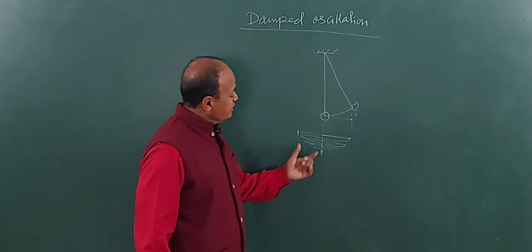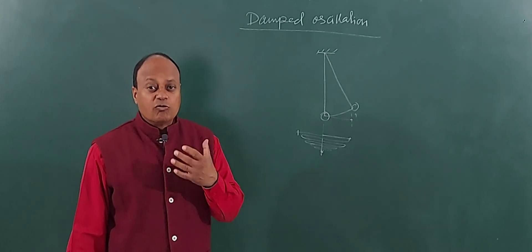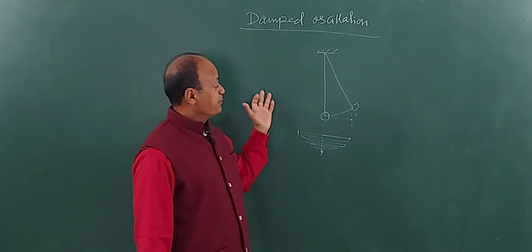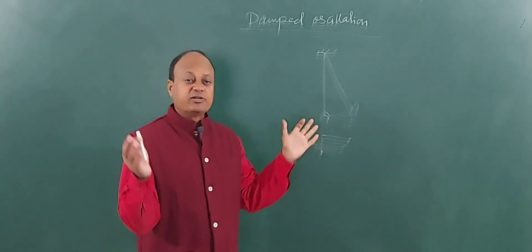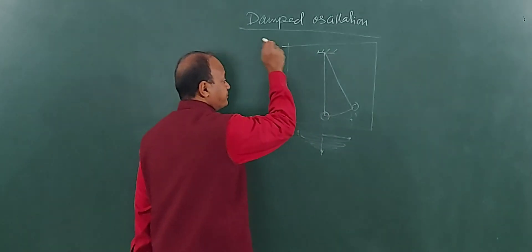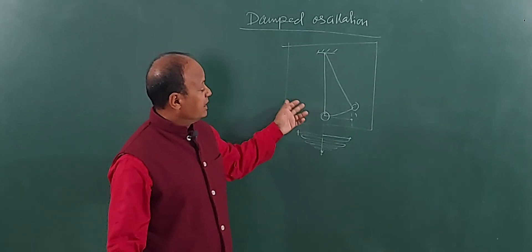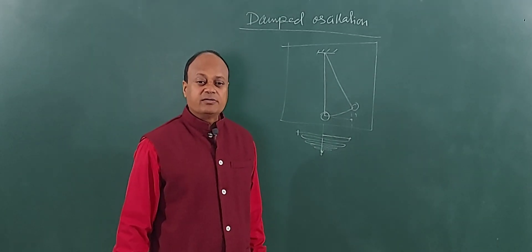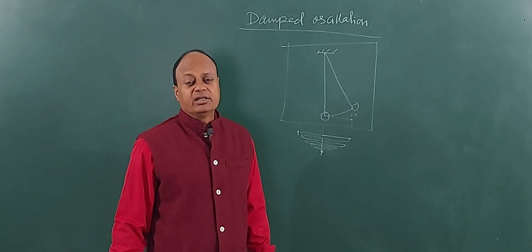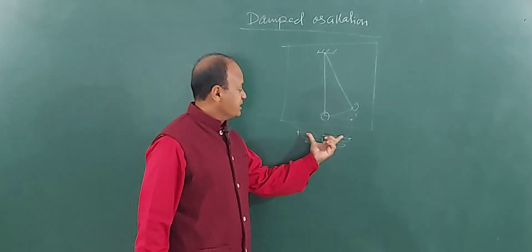Damping is this gradual decrease in the amplitude of vibration. Now the question is, why this gradual decrease? Suppose I take this pendulum in an evacuated chamber — I put this pendulum in an evacuated chamber where there is no air and then I oscillate it. What will I observe? That these oscillations will continue. They will never stop. There is no damping here.